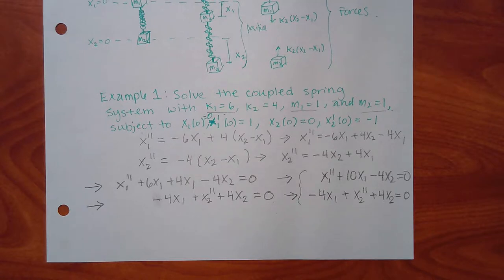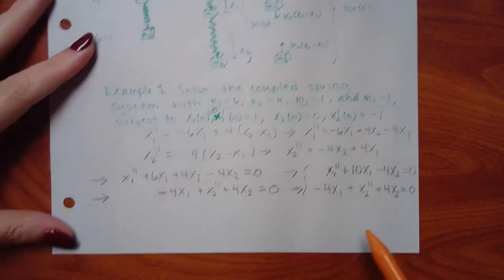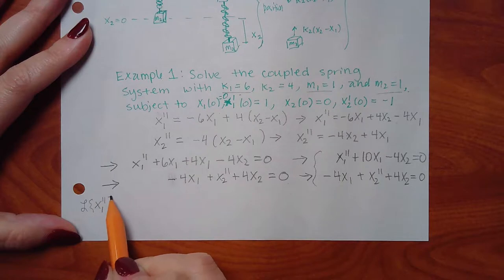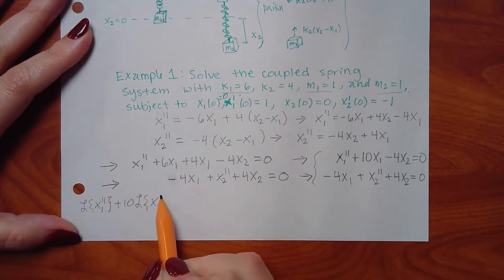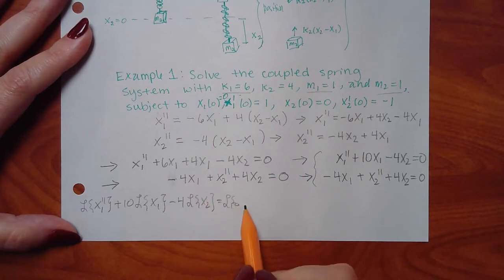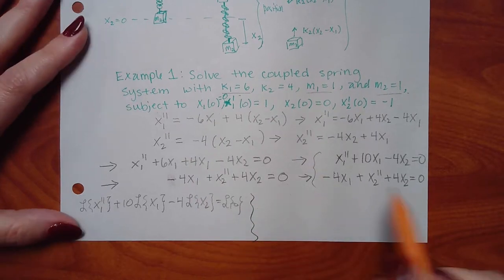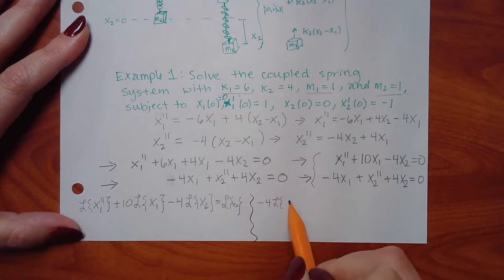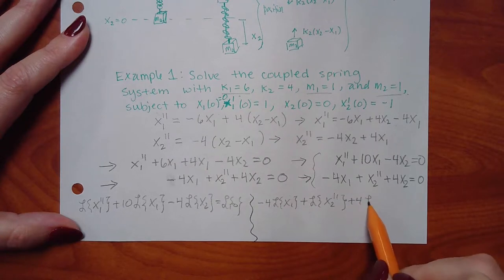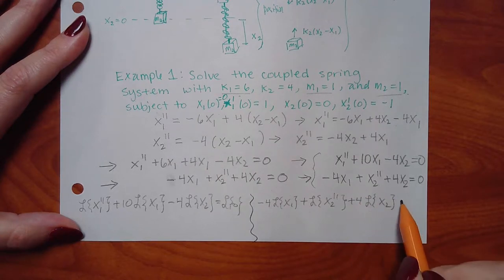Here's where we start the process. The first step is to Laplace transform both equations. I like to cut my page in half, with one equation on each side, working downward. So I'm going to Laplace X1 double prime, plus 10 Laplace X1, minus 4 Laplace X2, equal to Laplace of 0. And on the right-hand side: negative 4 Laplace X1, plus Laplace X2 double prime, plus 4 Laplace X2, equal to 0.